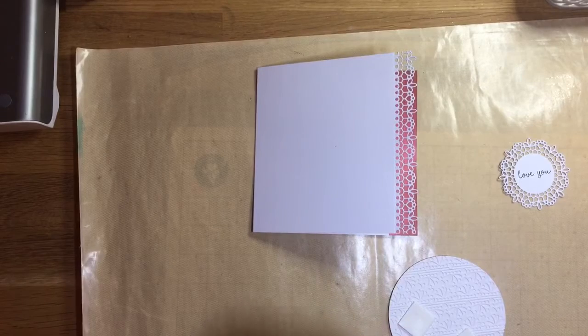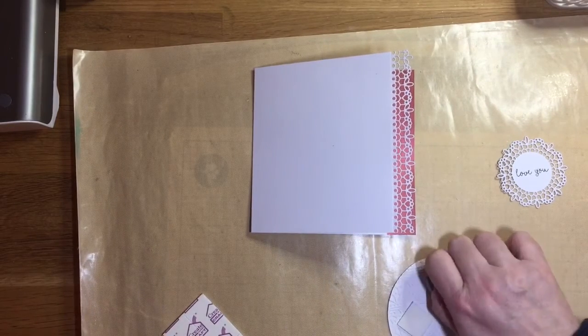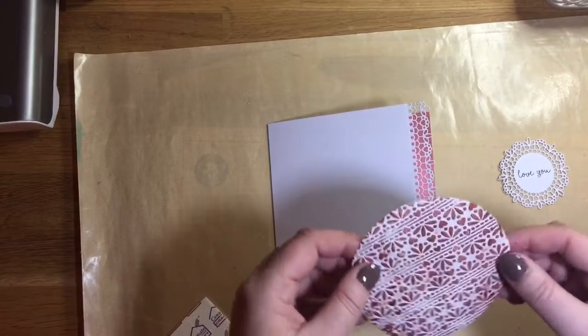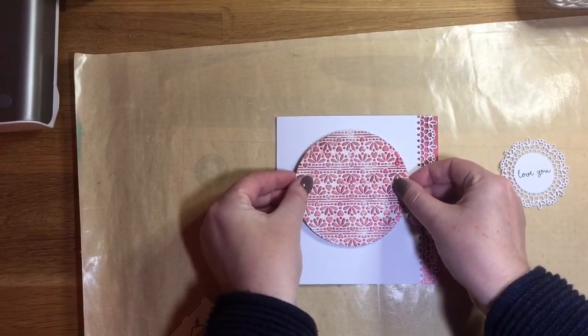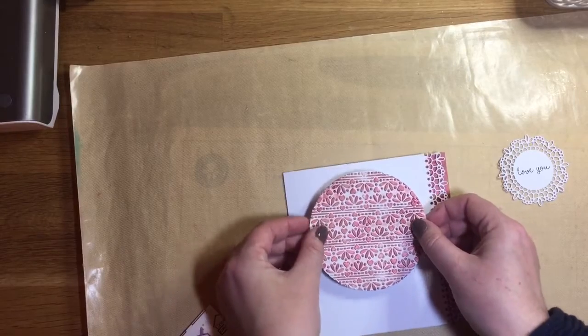I want everything to show nicely, so I'm going to layer up the first embossed piece with some foam pads which I've just put on the back. I want that to stand up from the card front.